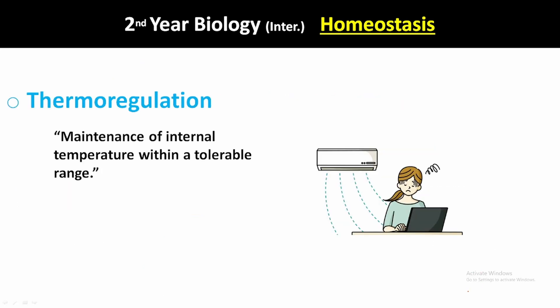Next is temperature. Temperature is a main factor that can affect an organism. The maintenance of temperature within a tolerable range is thermoregulation. My body's normal temperature is 37 degrees Celsius. I can tolerate up to 40 degrees Celsius maximum, but I cannot tolerate above 40 degrees Celsius. Thermoregulation is fundamental to homeostasis because all body parts, enzymes, proteins, and major biomolecules work within a normal temperature range.